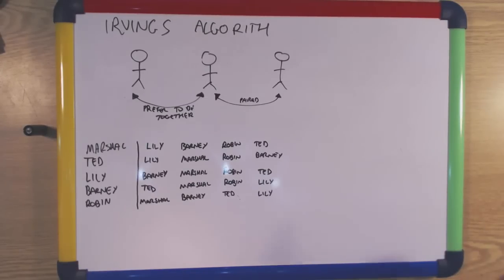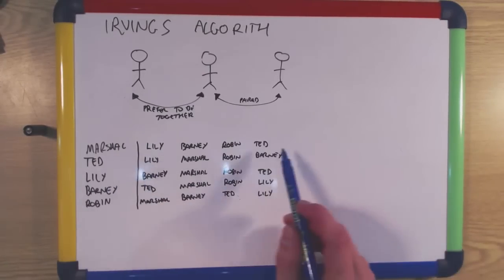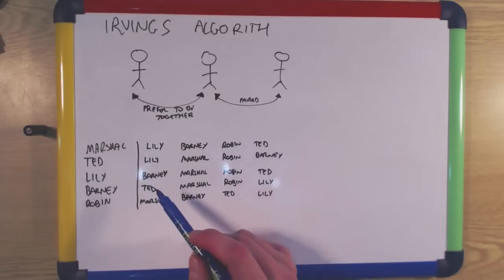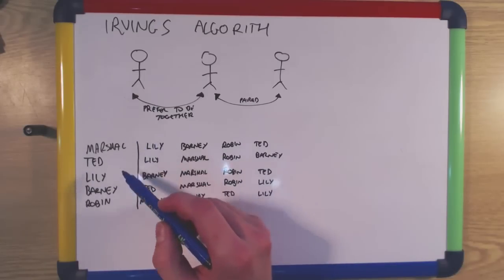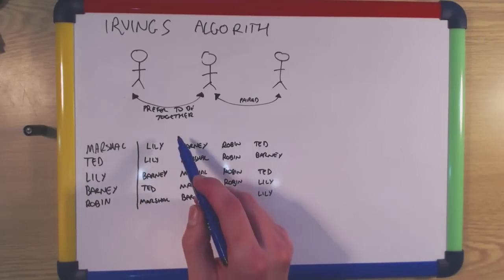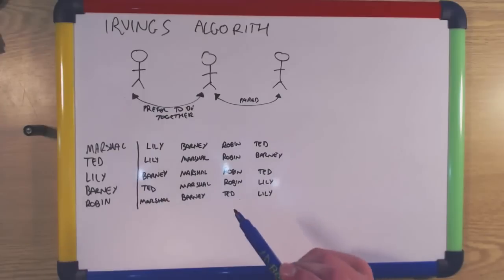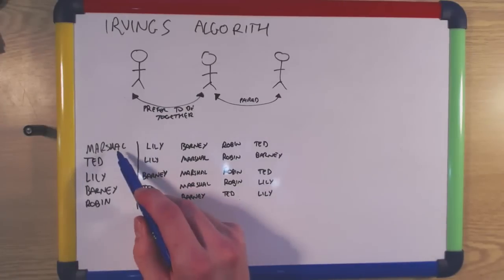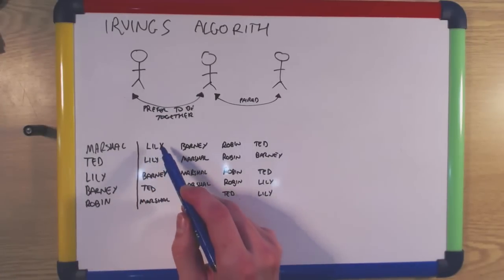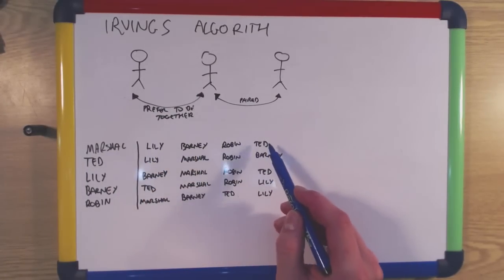Here we present an example from the TV series How I Met Your Mother. This is the preference table. Down the first column we have the names of the characters and to the right their respective list of preferences. Here we can see that Marshall's first preference is Lily, followed by Barney, Robin and finally Ted.